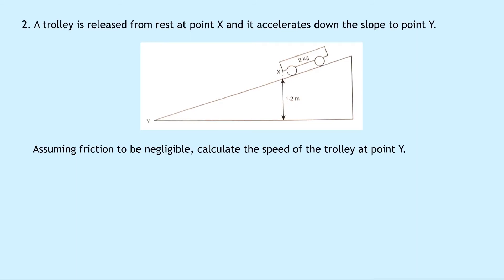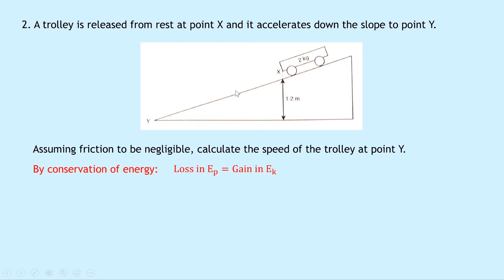Question two says that a trolley is released from rest at point X and it accelerates down the slope to point Y. Assuming friction to be negligible, calculate the speed of the trolley at point Y. By conservation of energy, the loss in gravitational potential energy at the top of the slope equals the gain in kinetic energy as it moves down. We know the mass is 2 kilograms, g is 9.8 newtons per kilogram, and the height h is 1.2 meters.